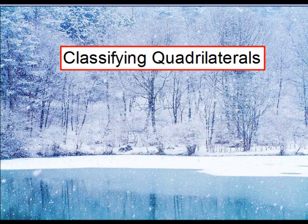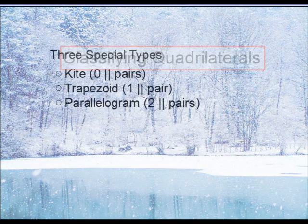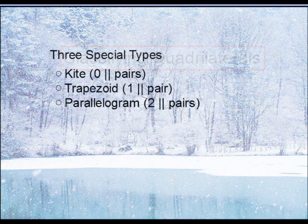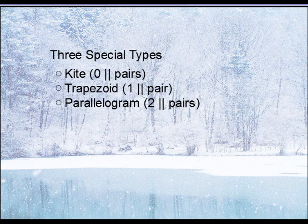This lesson is going to focus on classifying quadrilaterals. A quadrilateral is a four-sided figure — any figure with four sides is a quadrilateral. There are three specific types we're going to go into: the kite, the trapezoid, and the parallelogram. If you can't classify a four-sided figure as one of these three, then you would say that it is simply an ordinary quadrilateral.